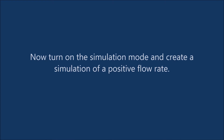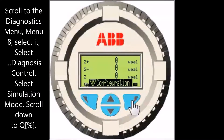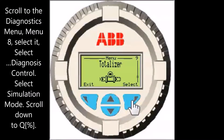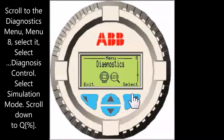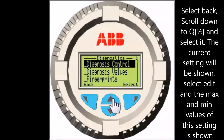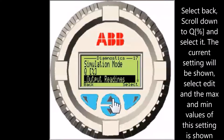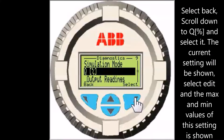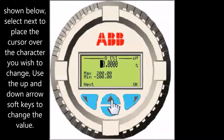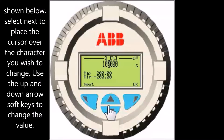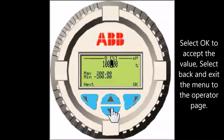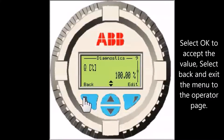Now turn on the simulation mode to simulate a positive flow rate. Scroll to the diagnostics menu, menu 8, and select it. Select diagnosis control, then select simulation mode. Scroll down to Q percent and select it. The current setting will be shown — select edit. The maximum and minimum values of the setting are shown below. Select next to place the cursor over the character you wish to change, and use the up and down arrow soft keys to change the value. Select OK to accept the value. Select back and exit the menu to the operator page.